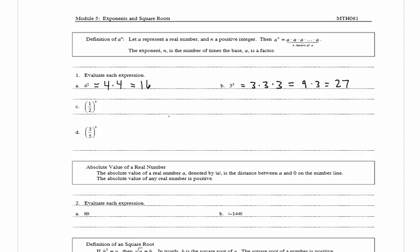In c we have 1 half raised to the fourth power. Our base is 1 half and we're going to write four factors of 1 half. So we have 1 half times 1 half times 1 half times 1 half. 1 times 1 times 1 times 1 is equal to 1, and 2 times 2 is 4, times 2 is 8, times 2 is 16.